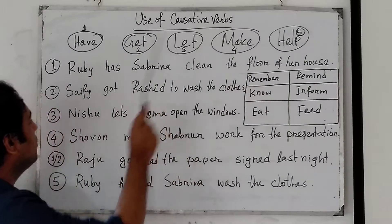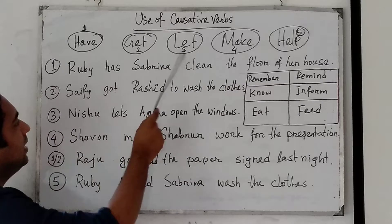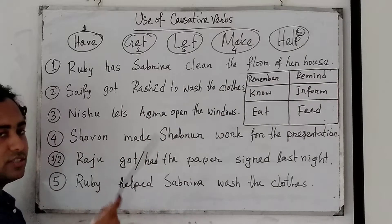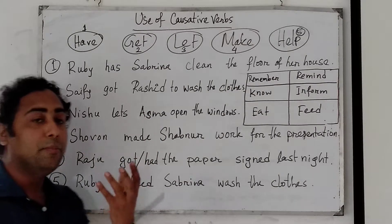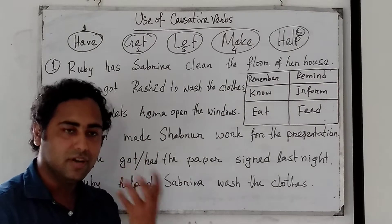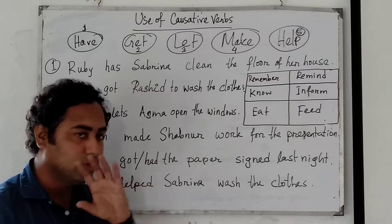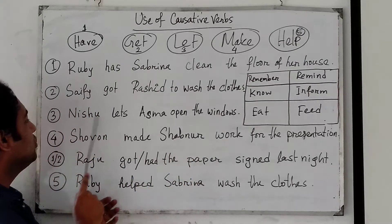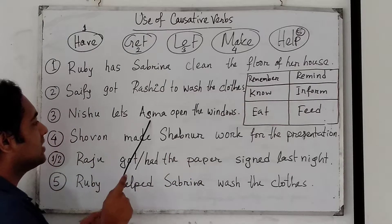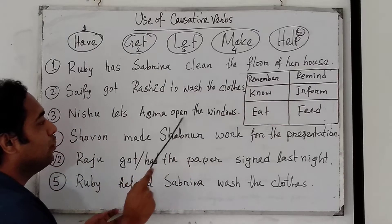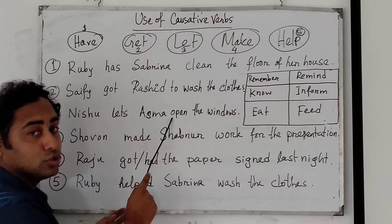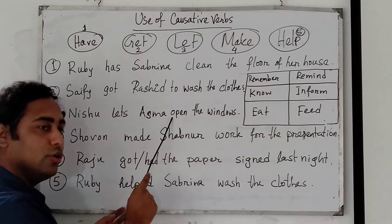Coming to the third one: let. Let is always followed by a bare verb — there will be no infinitive. 'Nishu lets Asma open the windows.' So there will be no 'to open,' only 'open.'